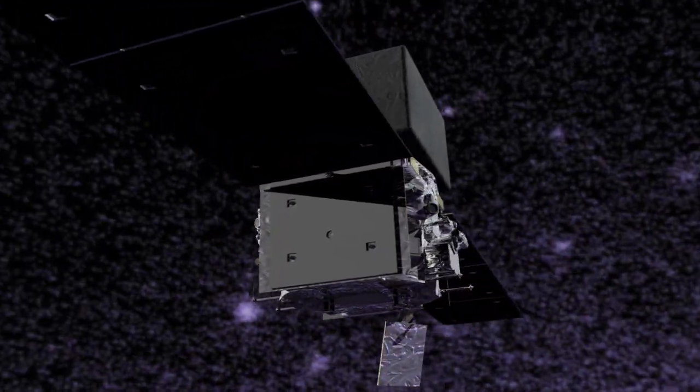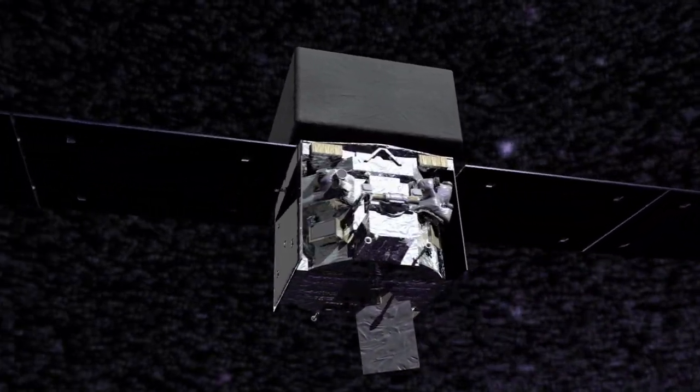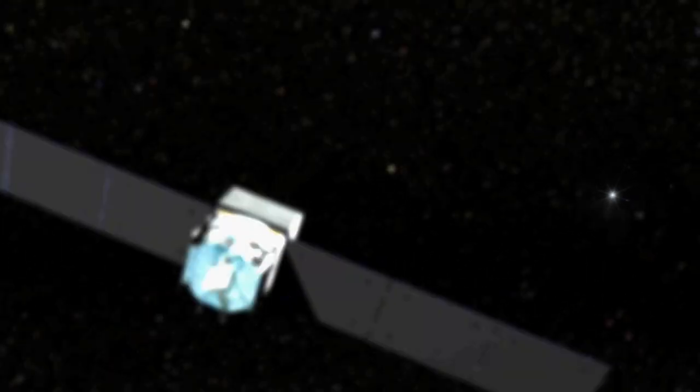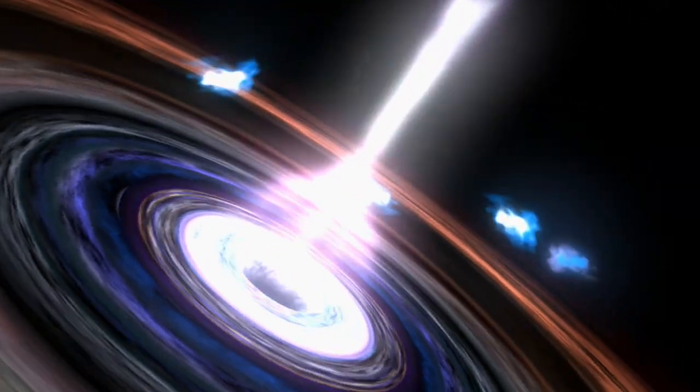The other instrument is called the Gamma-ray Burst Monitor, or GBM. It looks for spectacular flashes of gamma rays from, among other things, the birth of black holes far across the universe.